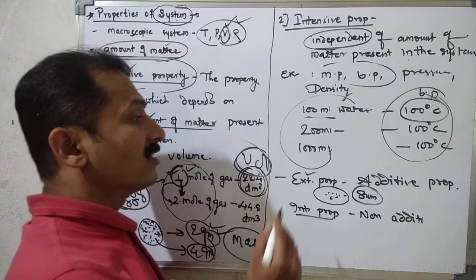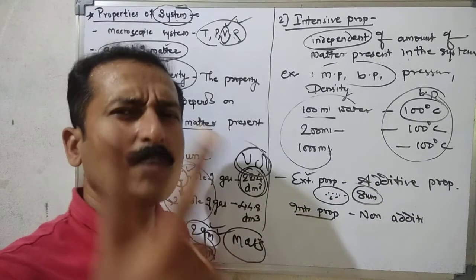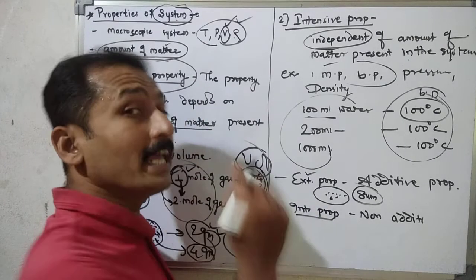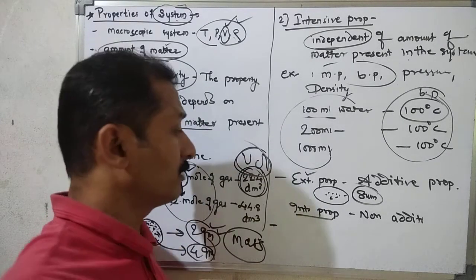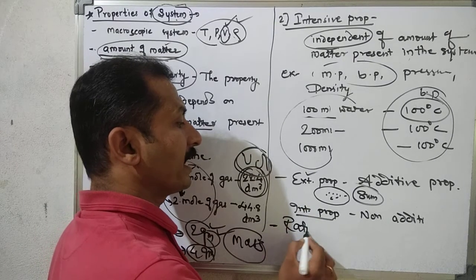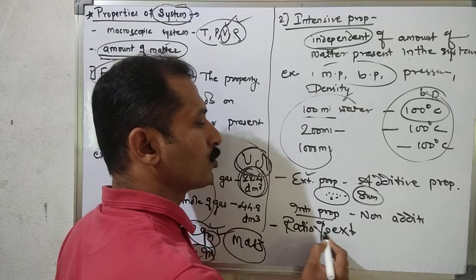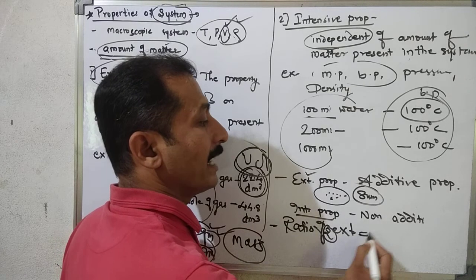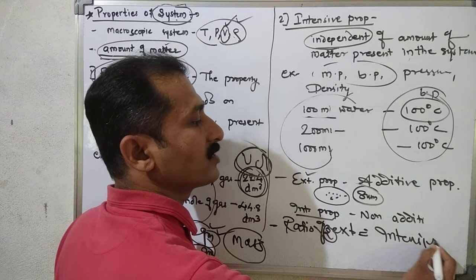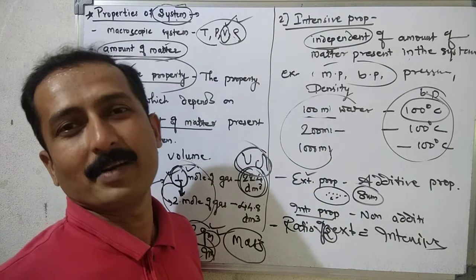Next important point: the ratio of two extensive properties is an intensive property. This is a very important point for the NEET, JEE, and CET exams. The ratio of two extensive properties gives an intensive property.